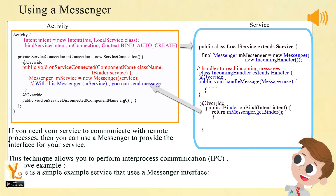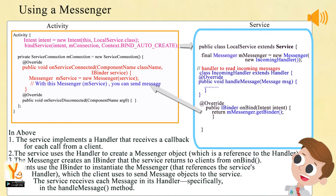Using a Messenger: if you need your service to communicate with remote processes, you can use a Messenger to provide the interface for your service. This technique allows you to perform inter-process communication (IPC). Above is a simple example service that uses a Messenger interface. First, the service implements a Handler that receives a callback for each call from a client. Second, the service uses the Handler to create a Messenger object, which is a reference to the Handler. Third, the Messenger creates an IBinder that the service returns to clients from OnBind.